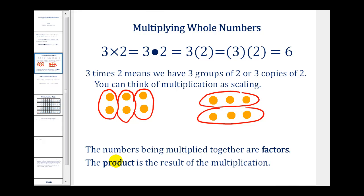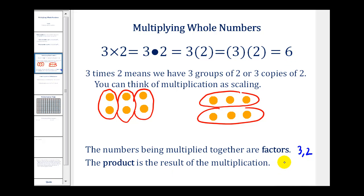Now for some vocabulary: the numbers being multiplied together are called the factors. So 3 and 2 are the factors. The product is the result or the answer when we multiply. So our product is equal to 6.